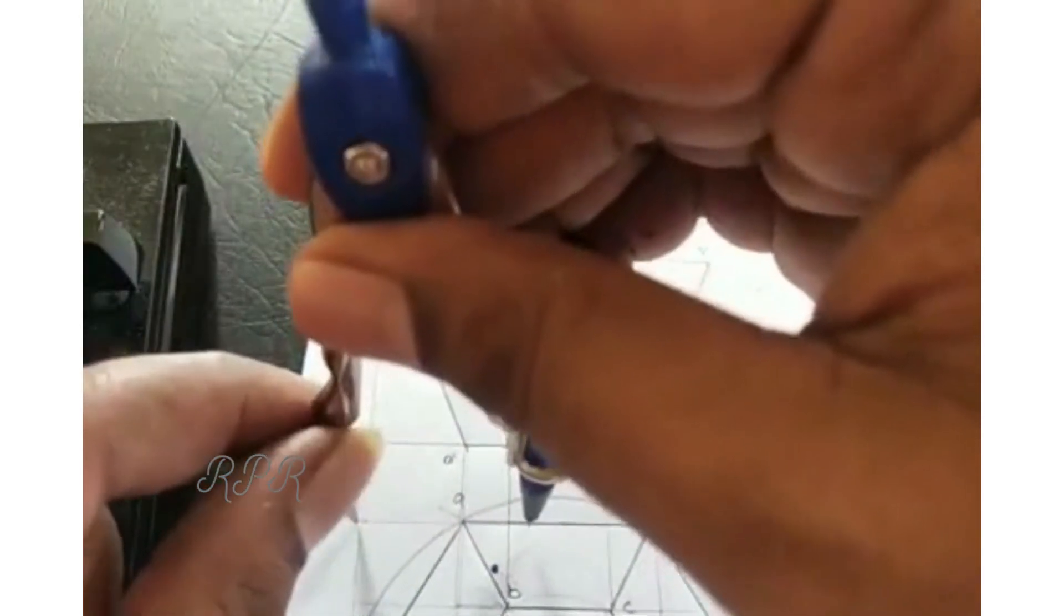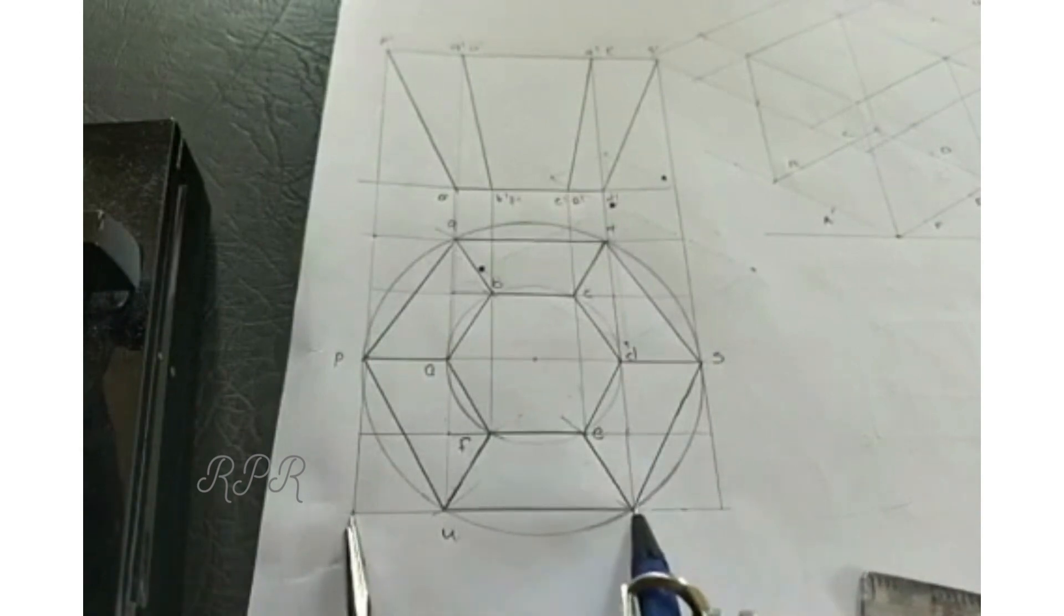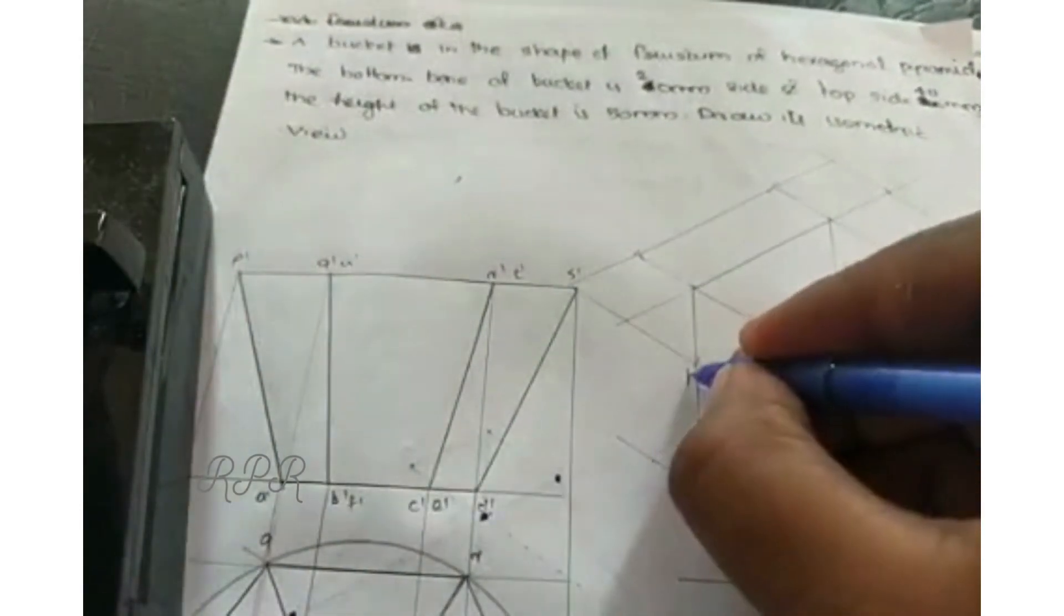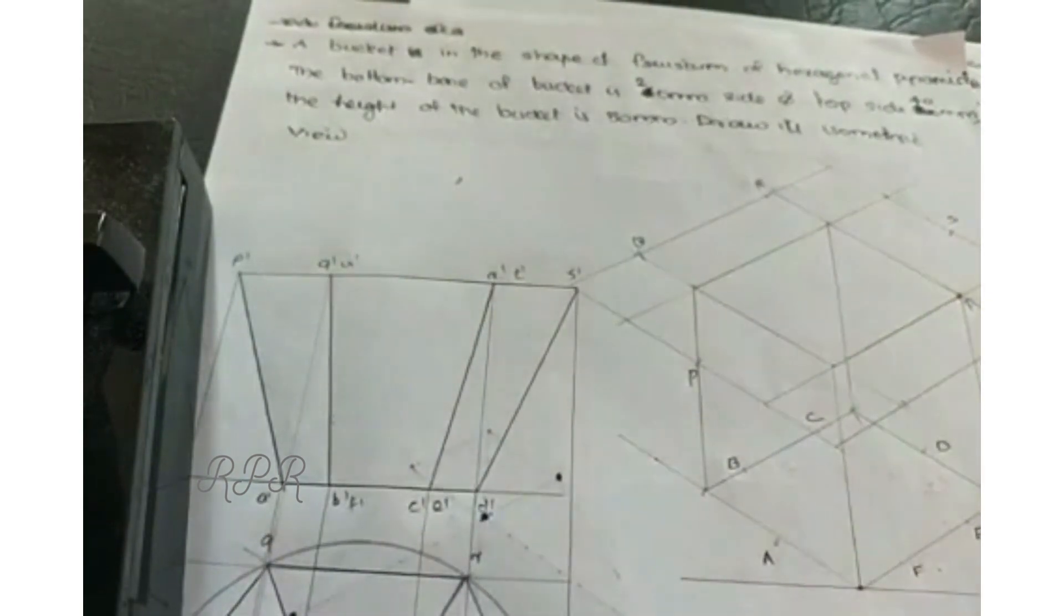This is point S. Then take distance of Q. Q, R, S. P, we will take this distance. Mark it from here. P, Q, R, S, T, 30 here, and U.